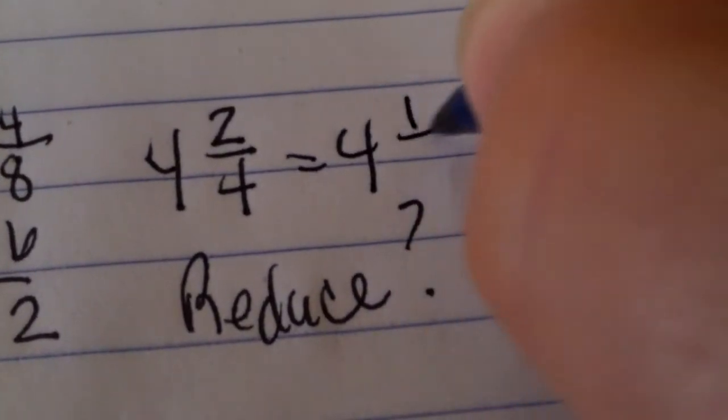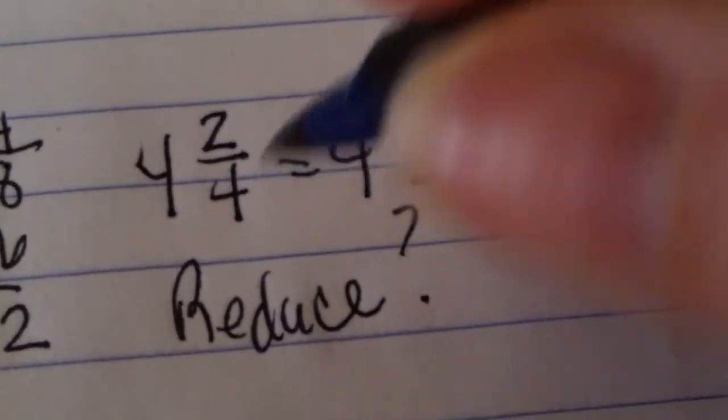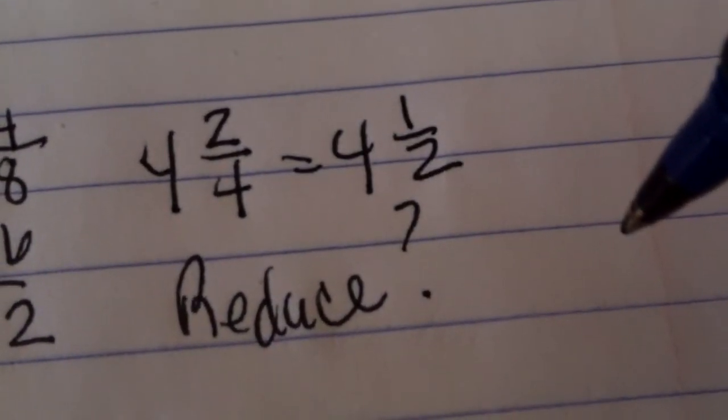In this case, we'd have four and a half. It doesn't always have to reduce, but you should check for it. Let's try another one again, just to make sure we're okay. Say seven thirds.